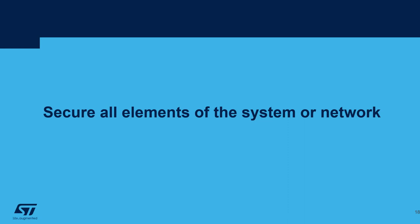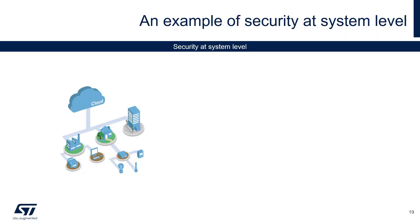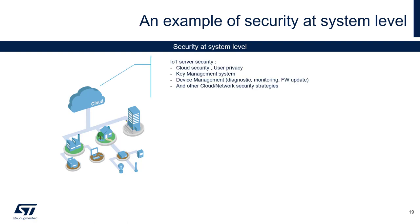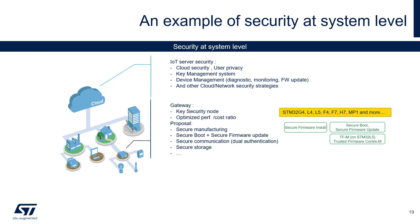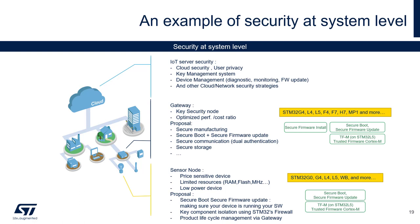Another point is ensuring all elements of the system or network are secured. To ensure security in a global system, there must be security at each level. First, IoT server security — a bit out of scope regarding MCU, but something to consider in your security analysis. At the gateway level, you can use MCU families like G4, L4, L5, F4, F7, H7, MP1, or more, depending on your needs, with secure boot, secure firmware update, and TFM on the L5. Finally, at the sensor node level where price sensitivity matters, we have G0, G4, L4, L5, WB, and more — security addressed through our software packages and security IP embedded in the MCU.